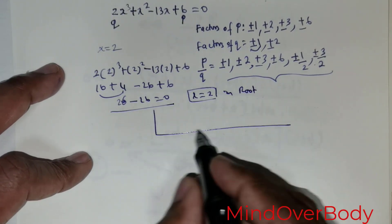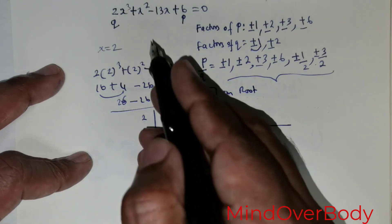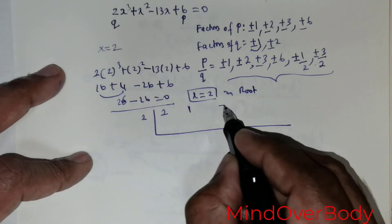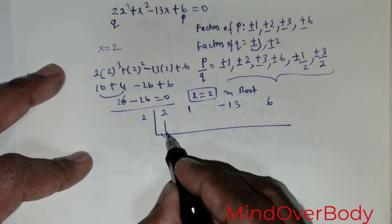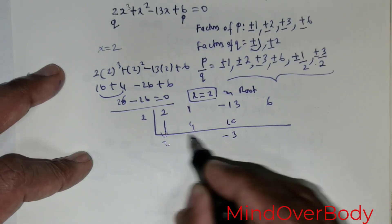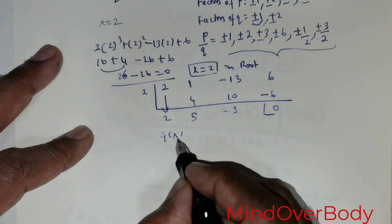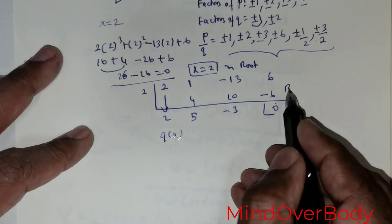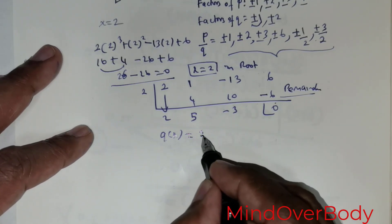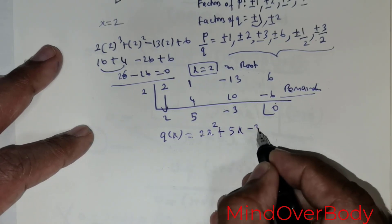Since x equals 2 is a root, we use synthetic division to reduce the cubic. Place 2 as the divisor and write the coefficients: 2, 1, negative 13, and positive 6. Bring the 2 down. 2 times 2 is 4; add to get 5. 2 times 5 is 10; add to get negative 3. Then we get 0. The quotient is 2x squared plus 5x minus 3.